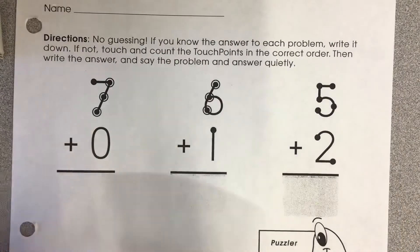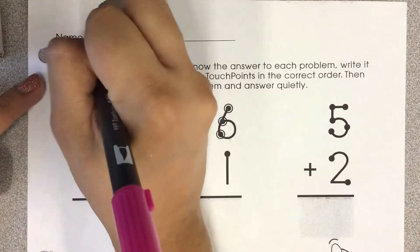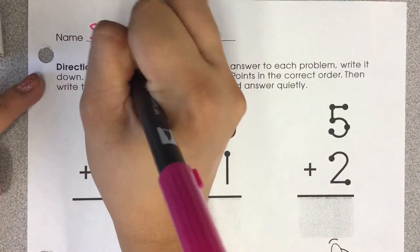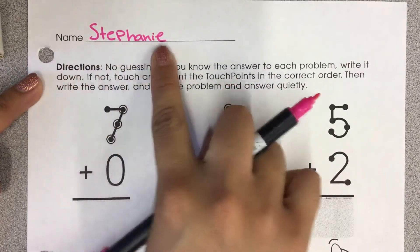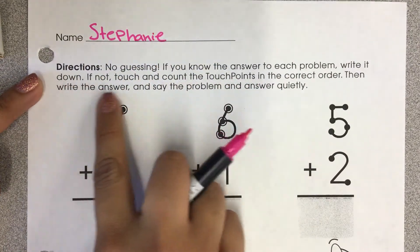So first things first, I'm going to write my name on my work to make sure that it doesn't get misplaced. So here's my name, Miss Stephanie, and then I'm going to read the directions.